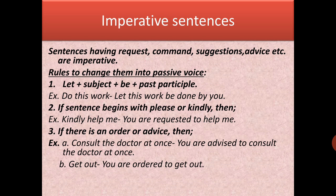To change imperatives to passive voice there are two ways. First: use the structure 'let + object + be + past participle'. If we don't know whether it is an order, request, or suggestion, we use this. The subject 'you' is hidden in imperative sentences. Example: 'Do this work' — object is 'this work'. Passive: 'Let this work be done by you.'